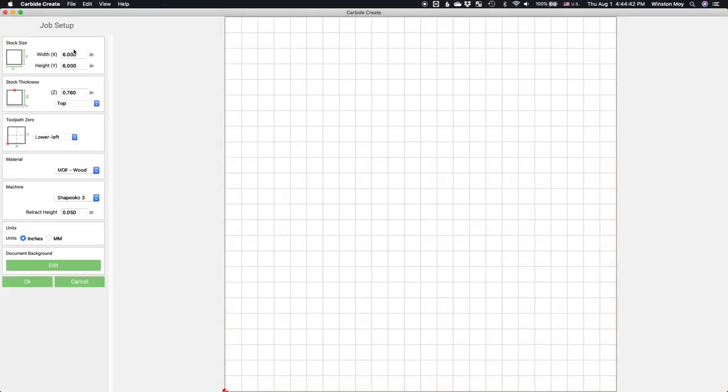I'll start by defining my setup. I want my canvas to be at least 5 or 6 inches in each dimension, and I'll assume my stock is 0.76 or 0.77 inches thick.